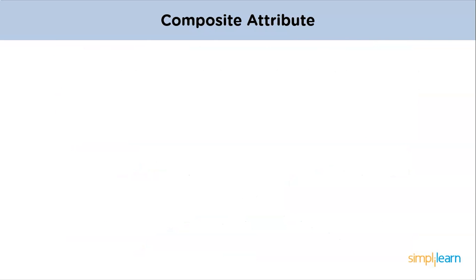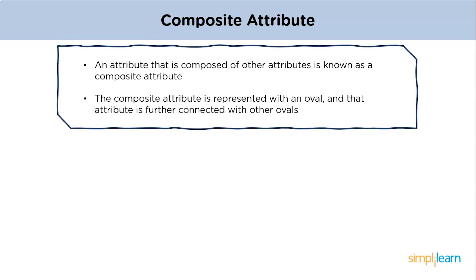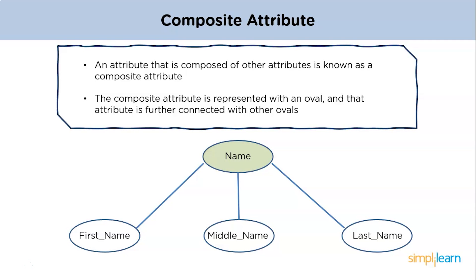An attribute that is composed of several other attributes is known as a composite attribute. An oval showcases the composite attribute, and the composite attribute oval is further connected with other ovals. In the example, the attribute 'name' can have further subparts such as first name, middle name, and last name — this classification is known as a composite attribute.